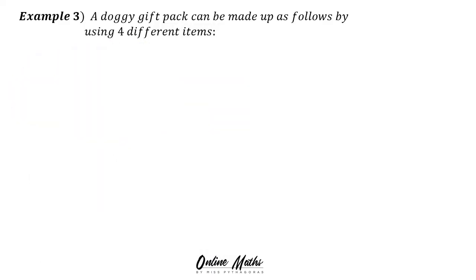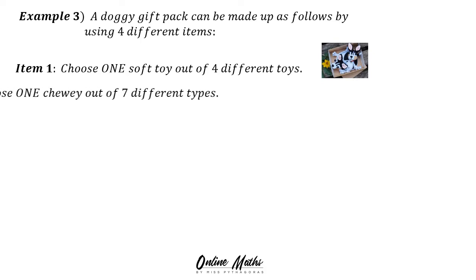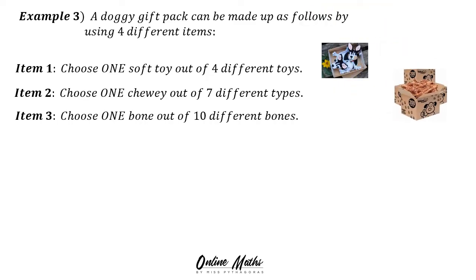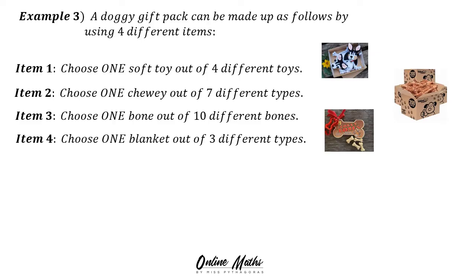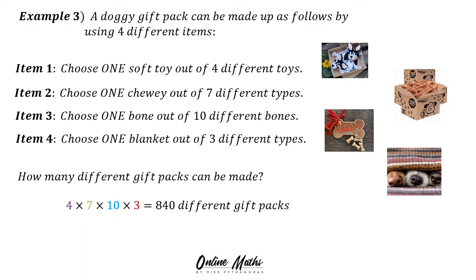Example 3. A doggy gift pack can be made up as follows using 4 different items. Item 1: choose 1 soft toy out of 4 different toys. Item 2: choose 1 chewy out of 7 different types. Item 3: choose 1 bone out of 10 different bones. Item 4: choose 1 blanket out of 3 different types. How many different gift packs can be made? 4 times 7 times 10 times 3 equals 840 different gift packs.